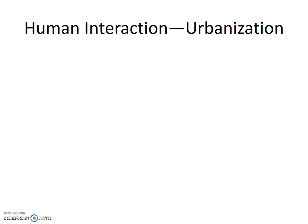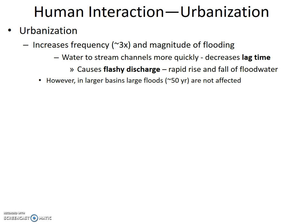Human interaction — urbanization — increases flood frequency about three-fold and also increases the magnitude of flooding. This is because water enters stream channels more quickly, decreasing lag time. This decrease in lag time causes flashy discharge — the rapid rise and fall of flood water as storm water quickly gets flushed into and down streams. However, in larger basins, large floods greater than about the 50-year flood are not significantly affected.